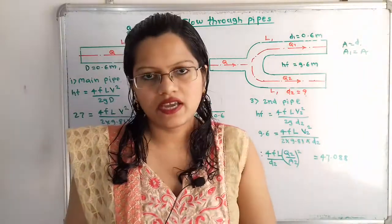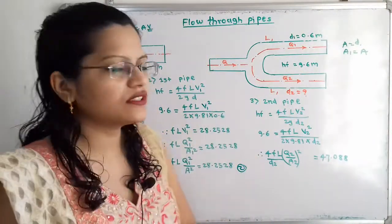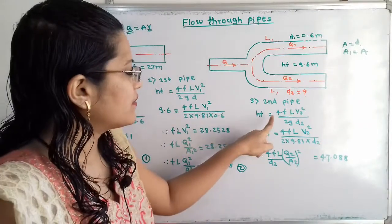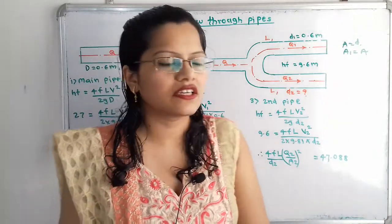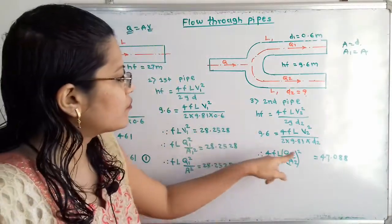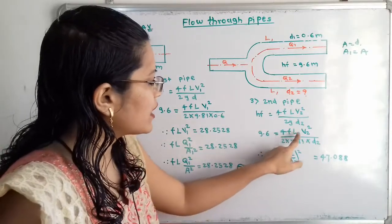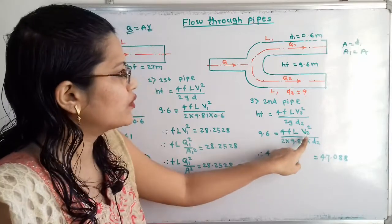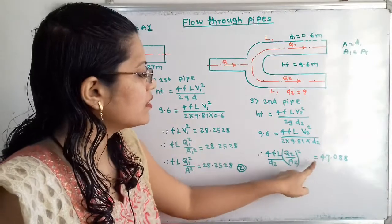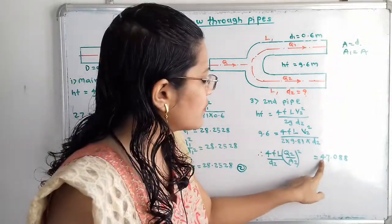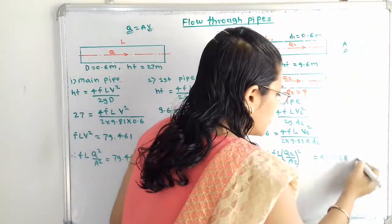For the second parallel pipe, the length remains the same and discharge is Q2. We write HF = 4FL × V2²/(2G × D2), where D2 is unknown. Expressing V2 as Q2/A2 and rearranging, we get FL/D2 × Q2²/A2² = 47.088. This is equation 3.